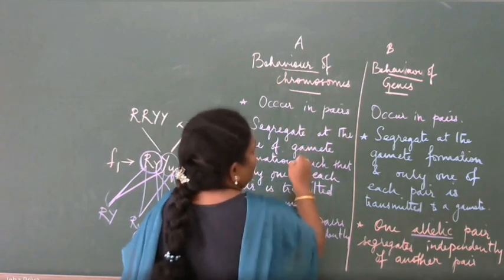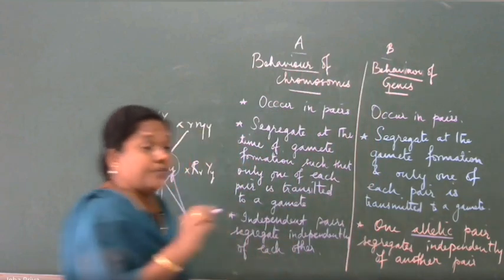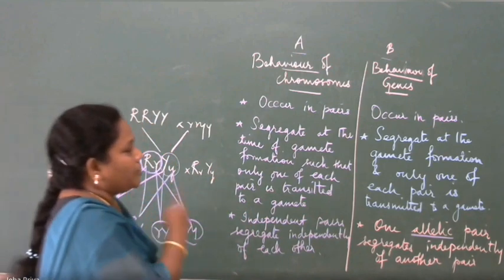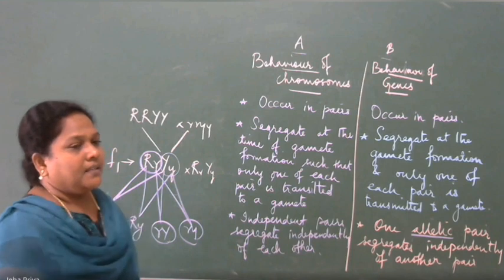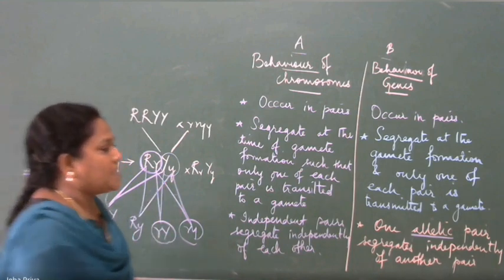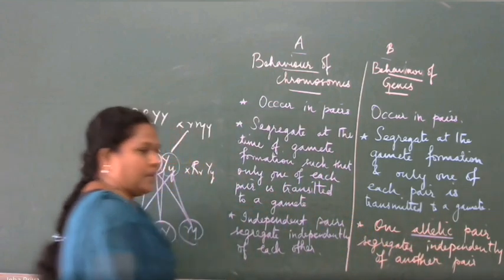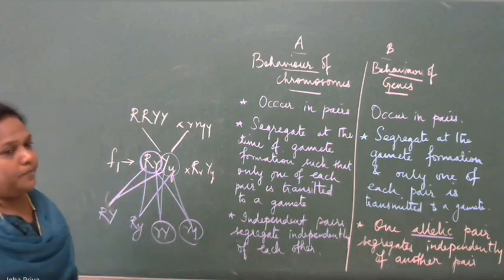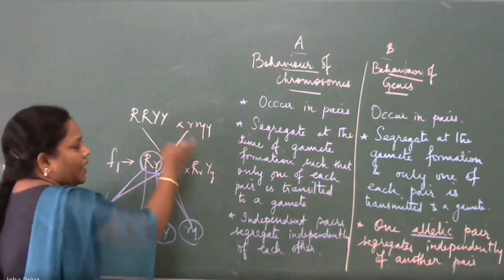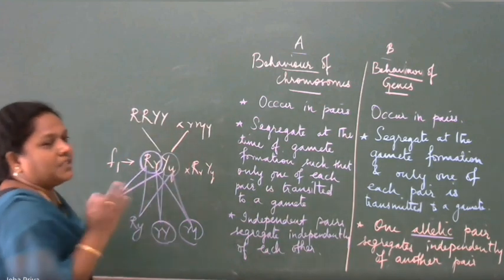They would not have told you which one is chromosome and which one is genes — they only give A and B and ask you to find out the answer. Can you tell which of these columns, whether A or B, represents the chromosome and which represents the gene? How did you decide? This type of question is given in NCERT. Here, one pair segregates independently of another pair — that key phrase is very important. Otherwise the characters, everything is more or less the same. The behavior of chromosomes and behavior of genes is more or less similar.